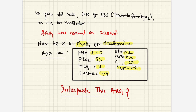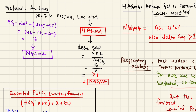All of you have correctly said this is a normal anion gap acidosis. The patient has metabolic acidosis because the pH is 7.10 and bicarbonate is 11. If you calculate the anion gap — sodium minus bicarbonate plus chloride — it comes to 6, which is normal. So the patient is having a normal anion gap acidosis (NAGMA).